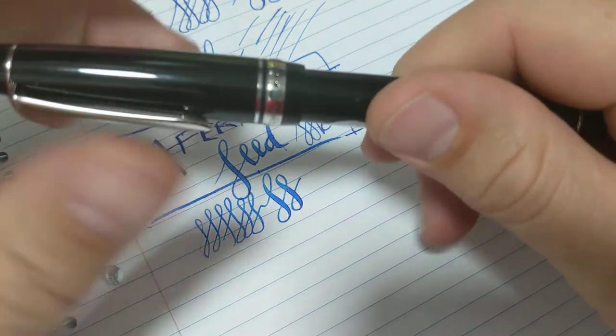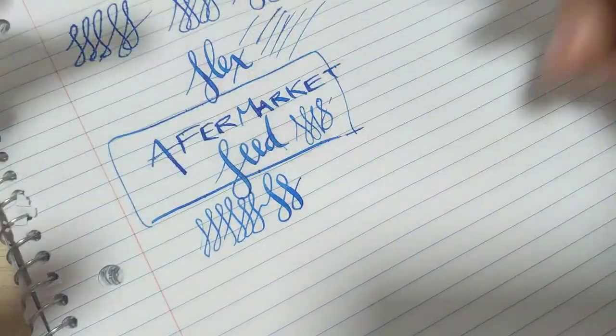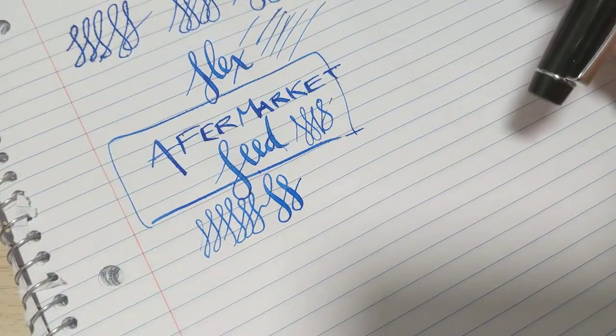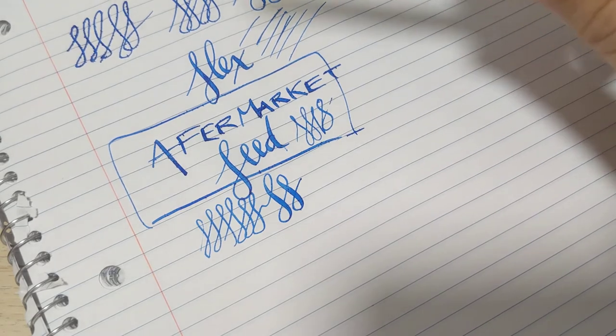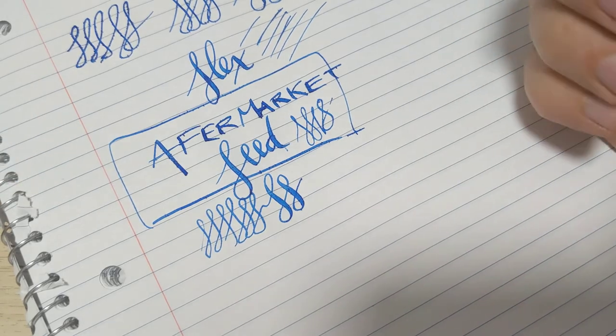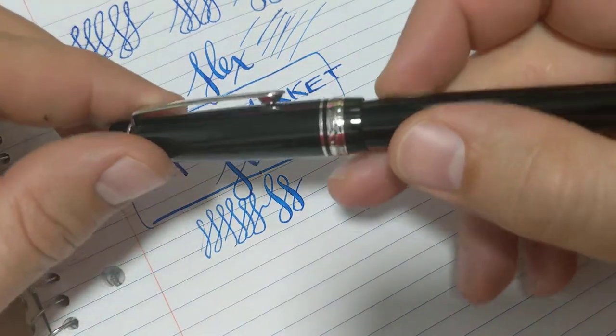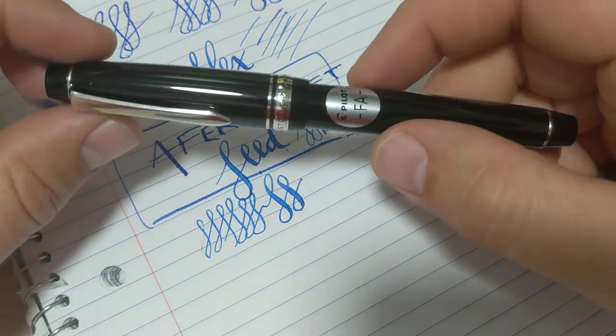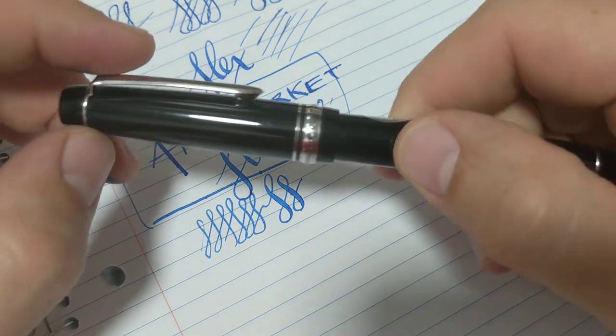So if you get the pen, you're just going to have to do that, whether you get a Spenserian grind or do whatever else you want to do to it. But if you want it to perform nicely as it should, Pilot should address this right out of the box. Maybe they should contact the folks that provide the feed that I ended up having to buy.